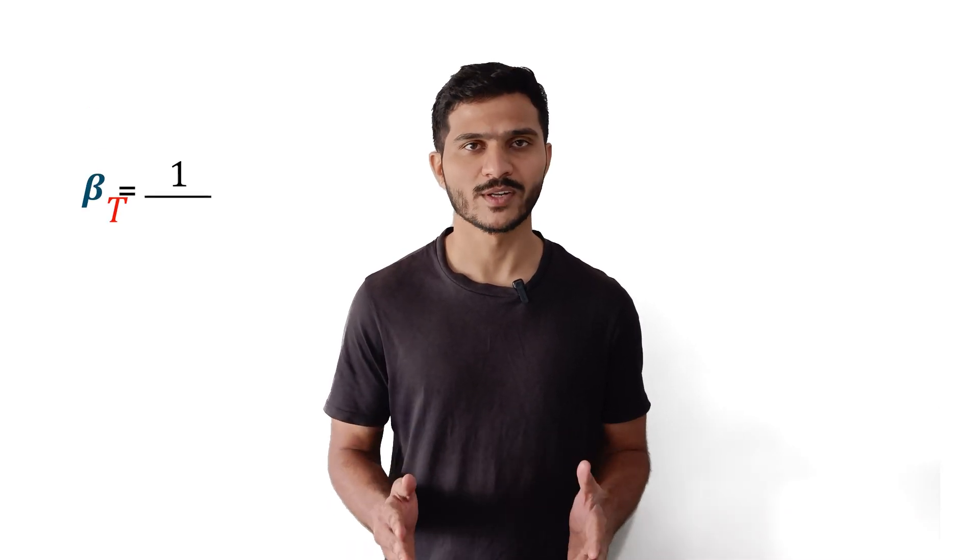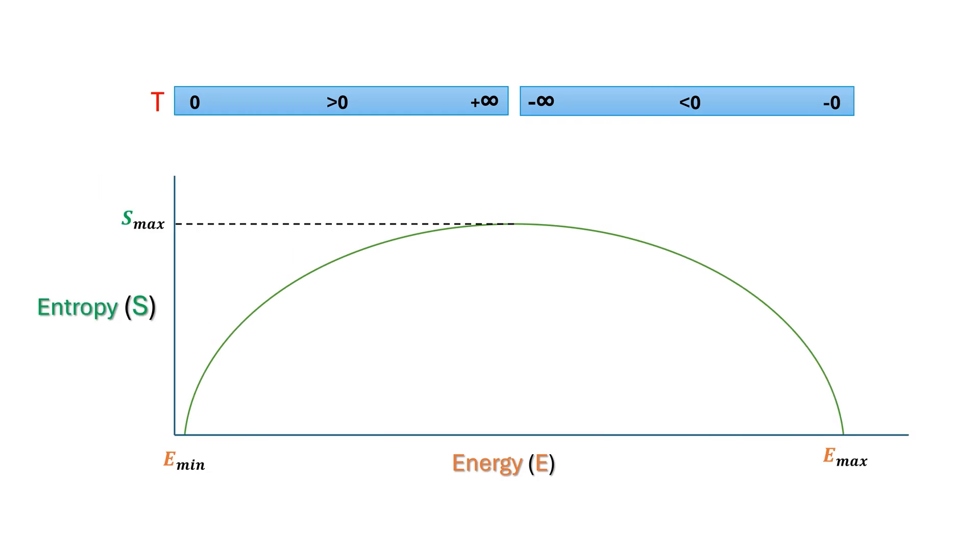How can a plus infinity and minus infinity be the same things? In statistical mechanics, temperature T is not used that often. Instead, we use beta, which is inverse of the temperature. So when we look in terms of beta, plus infinite temperature and minus infinite temperature are the same, namely zero.